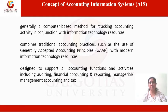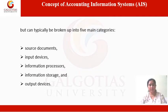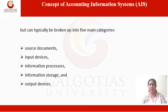An accounting information system is a unified structure that employs physical resources and components to transform economic data into accounting information. In essence, the goal of an accounting system is to record financial data and turn it into useful financial information. There are many different parts and components to any accounting information system, but they can typically be broken up into five main categories: source documents, input devices, information processors, information storage, and output devices.